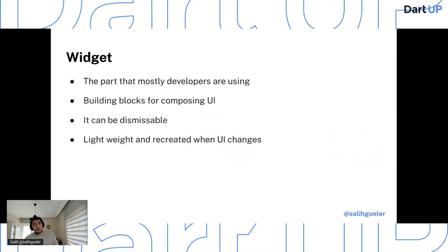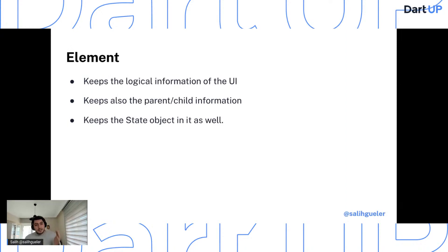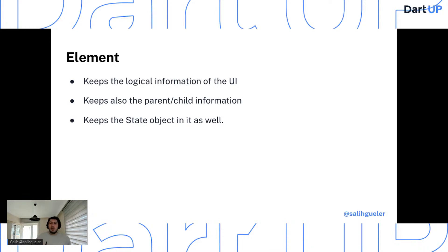Widget is the disposable, immutable, lightweight core building block — it can be thrown out and recreated. Element is the middle layer doing the heavy work: it keeps logic, parent and child information, and most importantly the state object. The general approach matches the beginning and end of child lists by comparing runtime type and key of each widget, finding matched children, and placing unmatched children into a hash table by key.